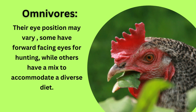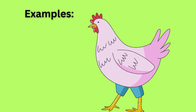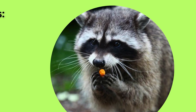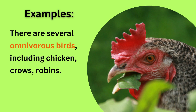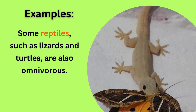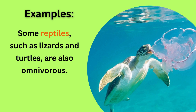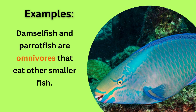Some common examples of omnivores are humans, bears, and raccoons. There are several omnivorous birds, including chicken, crows, and robins. Some reptiles, such as lizards and turtles, are also omnivorous. Damselfish and parrotfish are omnivores that eat other smaller fish.